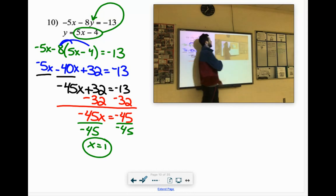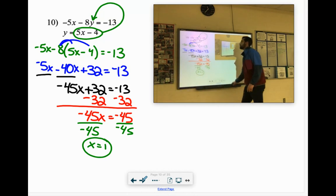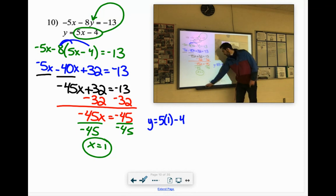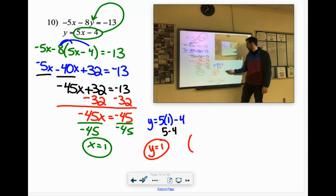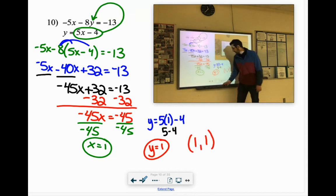But we still need to find y. So, to me, the second equation is easier. y equals 5x, 5 times 1, minus 4. 5 times 1 is 5, minus 4 is 1. Oh, that's sweet. x and y are both 1. 1, 1. That's where they would intersect each other.